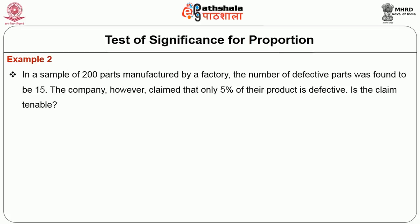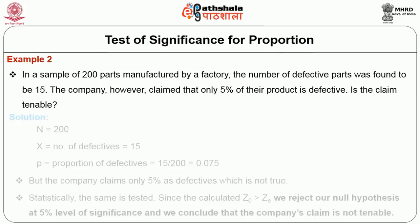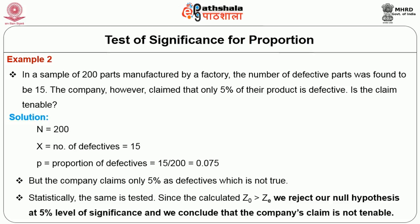Example 2: In a sample of 200 parts manufactured by a factory, the number of defective parts was found to be 15. The company claimed that only 5% of their products are defective. Is the claim tenable? n = 200, x = 15, and the proportion of defectives is 0.075 (i.e., 7.5%). Since the calculated Z value is greater than the expected Z value, we reject the null hypothesis at 5% level of significance and conclude that the company's claim is not tenable.